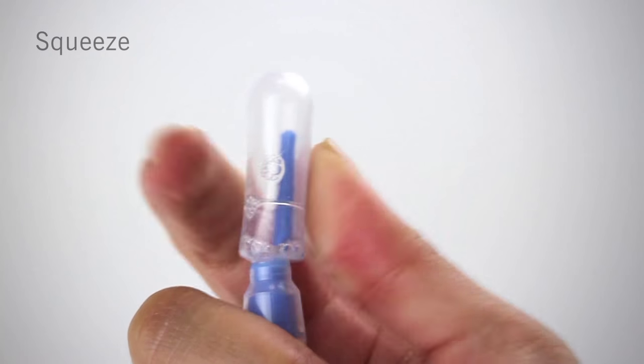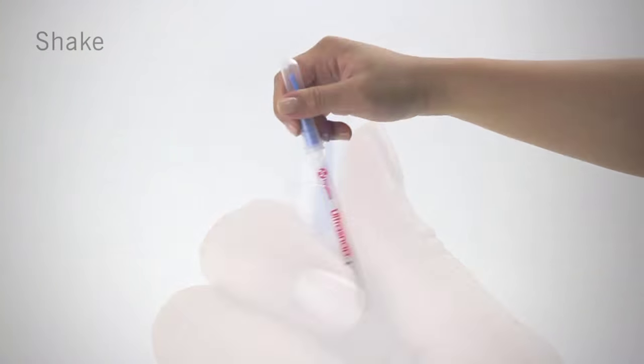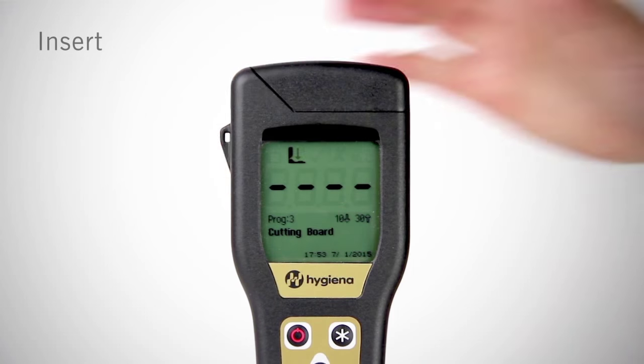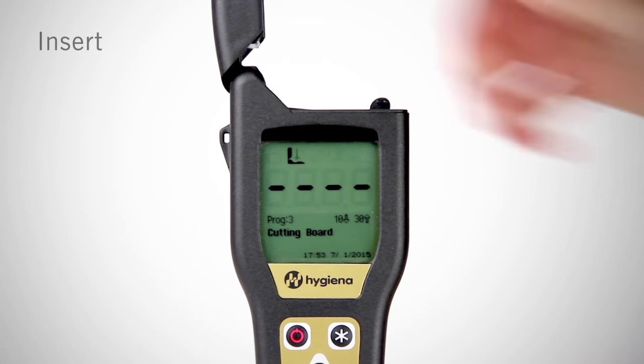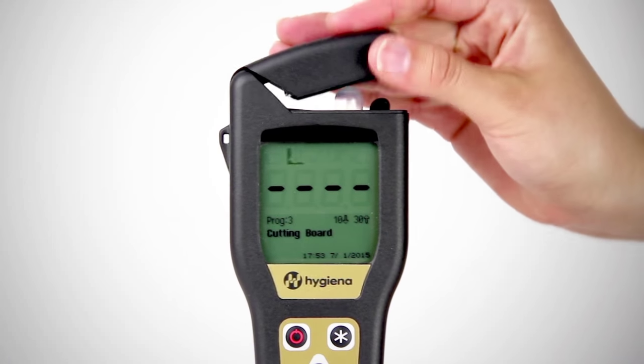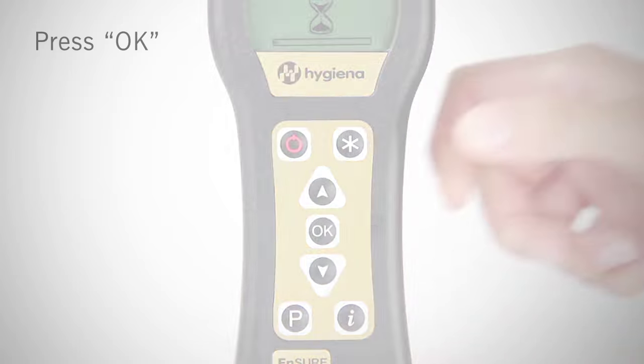Next, squeeze the bulb twice to expel liquid into the tube. Then shake for 5 seconds. Insert the swab into the reed chamber and close the lid. Hold the luminometer upright and press OK to initiate measurement.